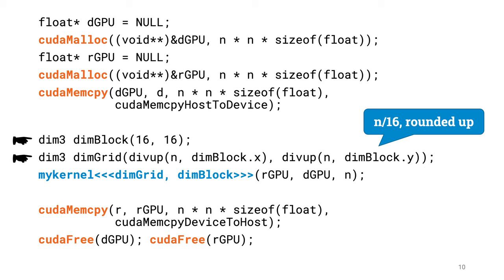Then the new thing here is that we use the structure dim3 to define multidimensional thread and block indexes. We will have n over 16 by n over 16 blocks rounded up, and each block has 16 by 16 threads. We launch the kernel and copy the result back to the CPU memory. And as usual, CUDA memcopy will wait for all threads to finish their work. And then we just release memory, and we are done.